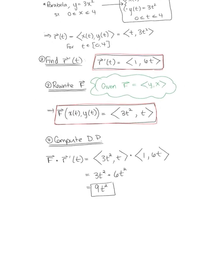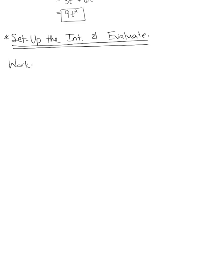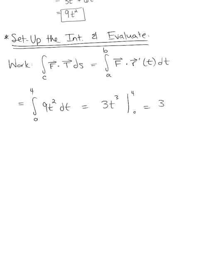We're finally ready to set up the integral and evaluate. The work is the vector line integral with a tangential component. Plugging in what we found, this integral is now from 0 to 4 of 9t squared dt. This integrates to 3t cubed from 0 to 4. We have 3 multiplied by 4 cubed gives us 64 times 3, which equals 192.